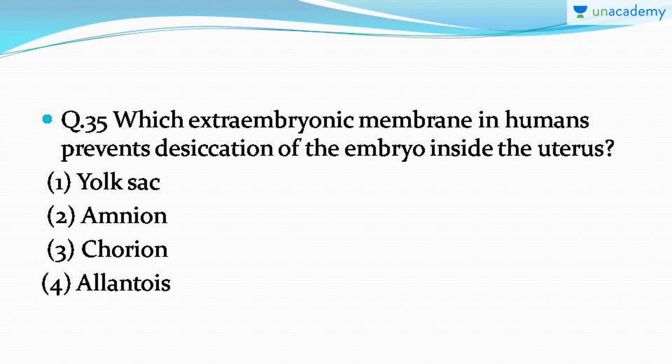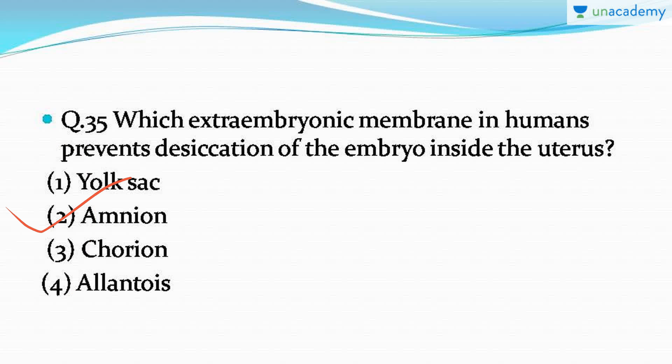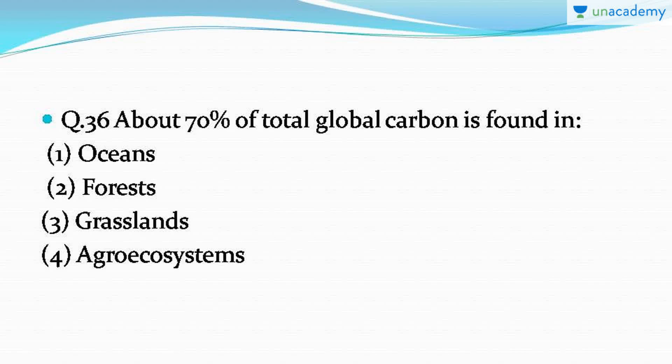Question number 35: which extra-embryonic membrane in humans prevents desiccation of the embryo inside the uterus? The correct answer is amnion. Amnion is the layer that prevents desiccation — that is, dryness — of the embryo inside the uterus, keeping it moist.